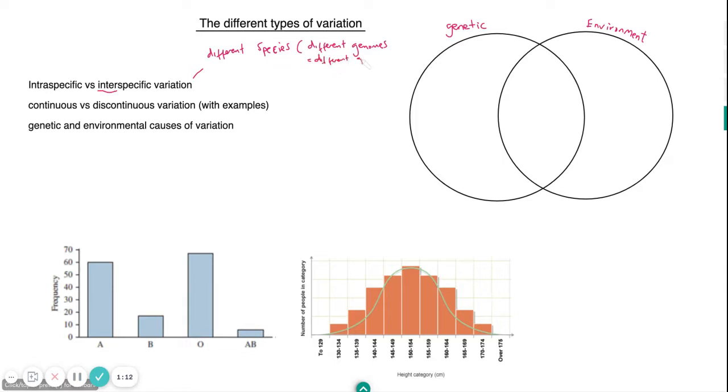Whereas if we talk about intraspecific, that's the variation between individuals of the same species. We have the same genes as each other - humans all have the same genes, that's why we're all called humans or Homo sapiens. So what makes us different this time is we have different alleles from each other. Why are there different alleles?